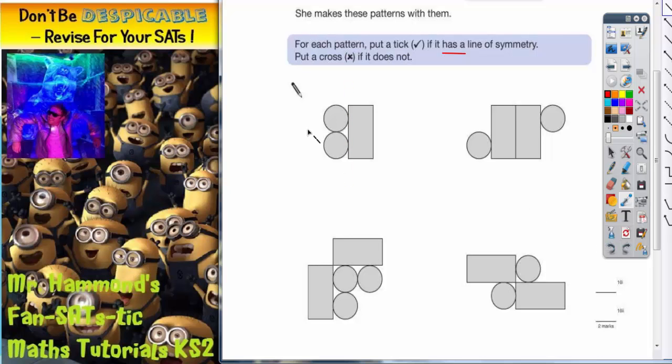But on this first shape if you go across like that then this circle would fit over this circle and this half of the rectangle would fit exactly over this half. So that must be a line of symmetry.